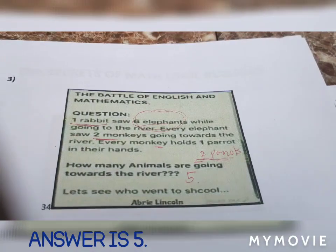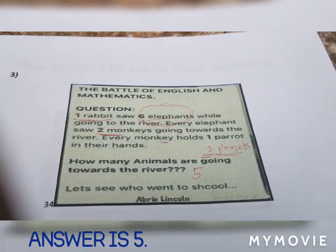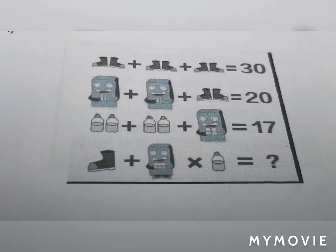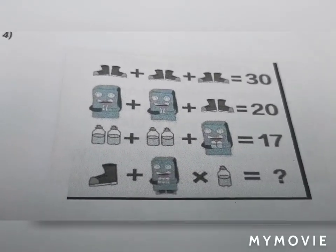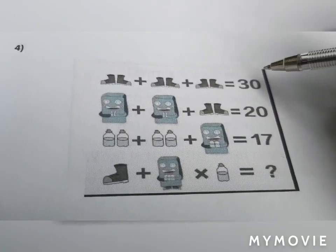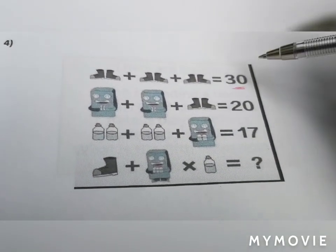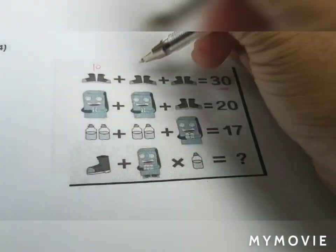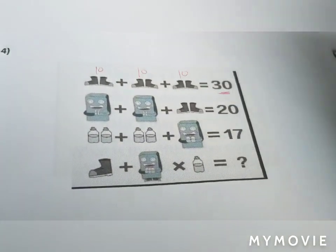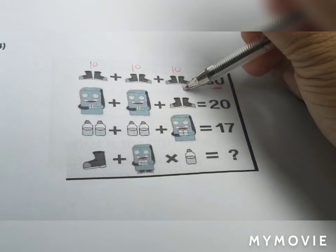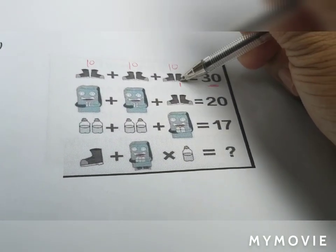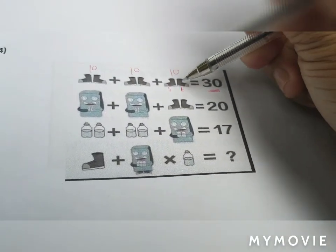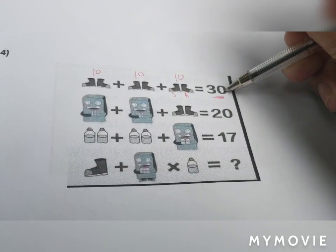Logic number four has four equations. The first equation equals 30: three pairs of shoes, each pair is 10, each single shoe is five. So 10 plus 10 plus 10 equals 30.